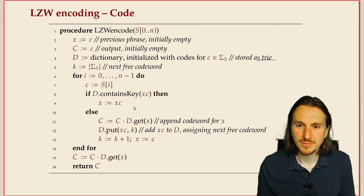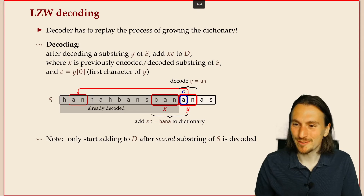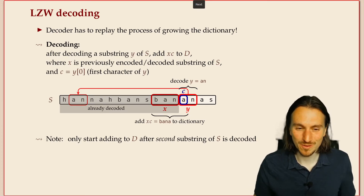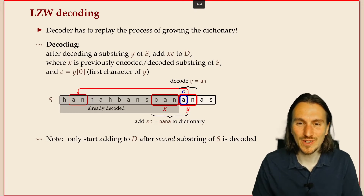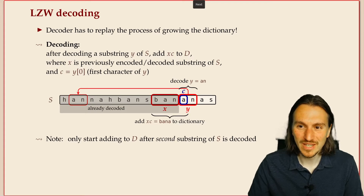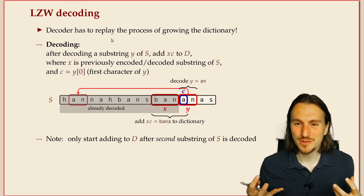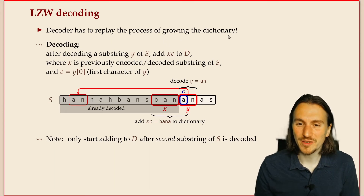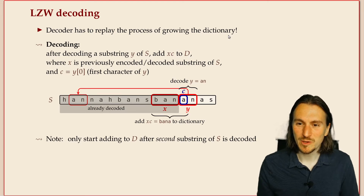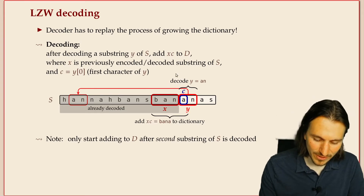We can now encode with LZW and achieve great compression, but a compression algorithm is only useful if we can also decode it. In decoding, the two steps — encoding and decoding — must stay in sync, replaying the same game: growing the dictionary. Whenever we decode something, we have to add the next bigger thing to the dictionary.